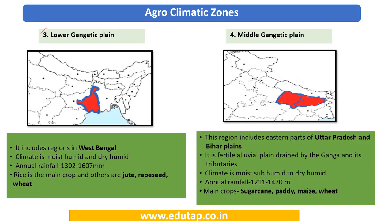The third zone is the Lower Gangetic Plains, which includes the region of West Bengal. The rainfall here is about 1300 to 1600 mm, and the climate is moist humid to dry humid. The main crops grown, apart from rice, include jute, rapeseed and wheat. Rice varieties from this region, such as Burdwan rice, have recently received GI tags.